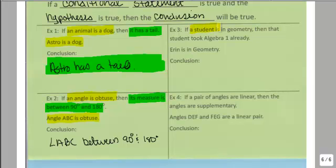This says if a student is in geometry, then that student took Algebra 1 already. Aaron is in geometry. That means that Aaron previously took Algebra 1.